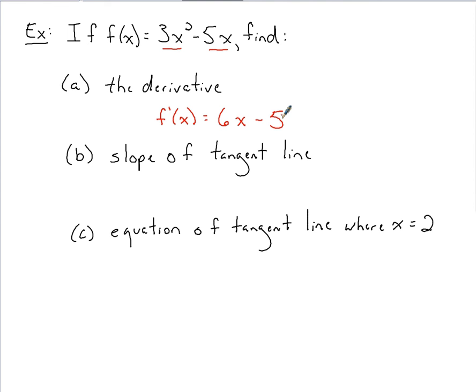We're going to find the slope of a tangent line. I need to look forward here to part C where we're finding the equation of that same tangent line where x is 2. We need this information of x is 2. We're going to take 2, we're going to plug into the derivative, and if we plug into the derivative, that gives us the slope.